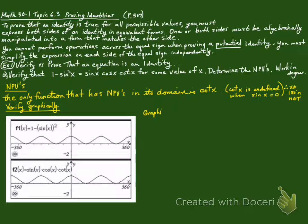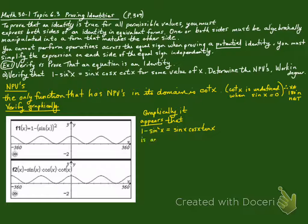You can verify this graphically. We can post a graph for both and have a look at it. It appears that the graph of 1 minus sine squared x is equal to sine of x times cosine of x times cotangent of x — it is an identity.